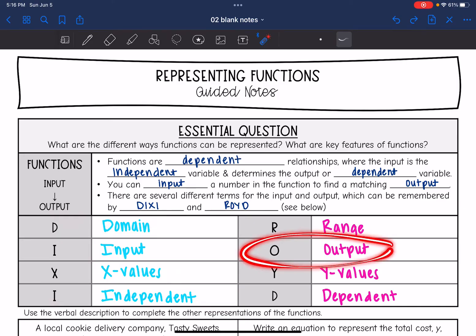And then Roy D, the O stands for output, the R stands for range, the Y stands for Y values, and the D stands for dependent.